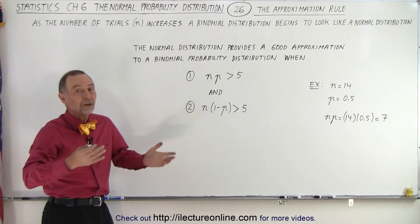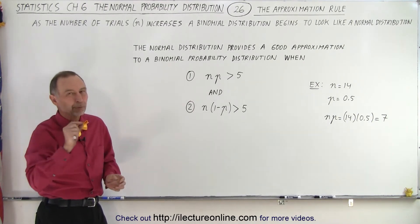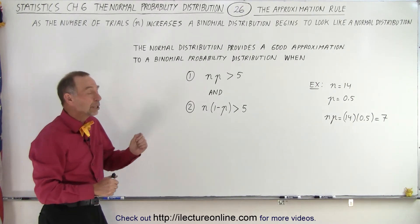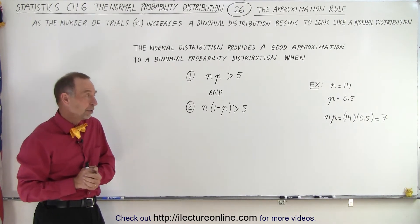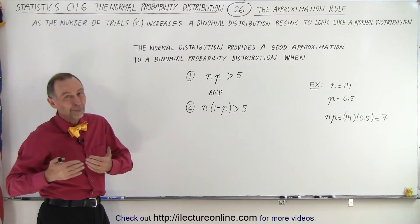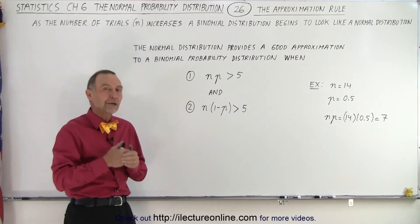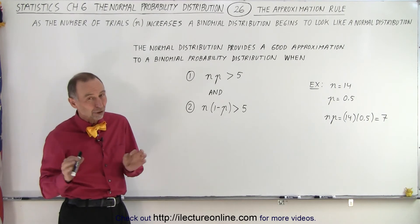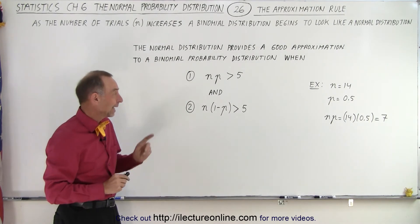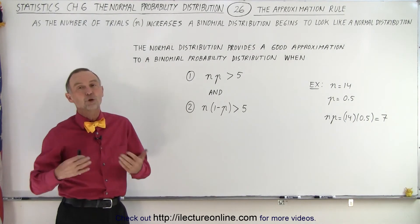Imagine when the product is 20 or 30 or 50, they will be very close, and it's a really good approximation at that time. Also, when n becomes large, using the calculations for the binomial probability equations are pretty tough, and it's a lot easier to use the normal distribution.